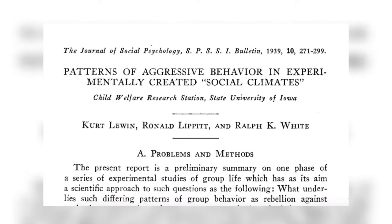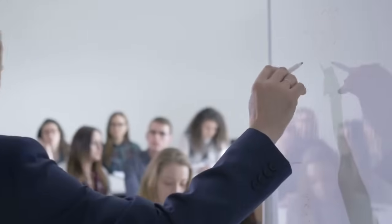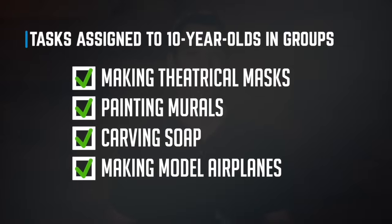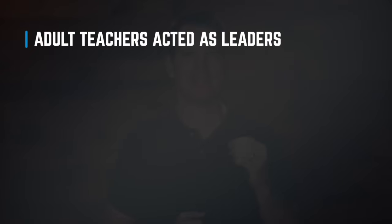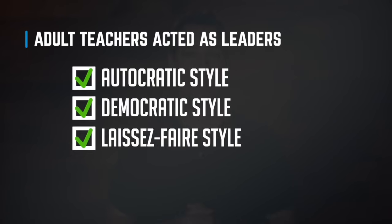So let's talk more about the research by Lewin and his co-authors. These authors did experiments leading groups of 10-year-olds. The children were put into small groups and asked to perform various tasks like making theatrical masks, painting murals, carving soap, and making model airplanes. The adults then acted as teachers and used autocratic, democratic, and laissez-faire styles. The researchers watched how the children responded, and also interviewed the children and parents to get their perspective on how their experience was under each leader.